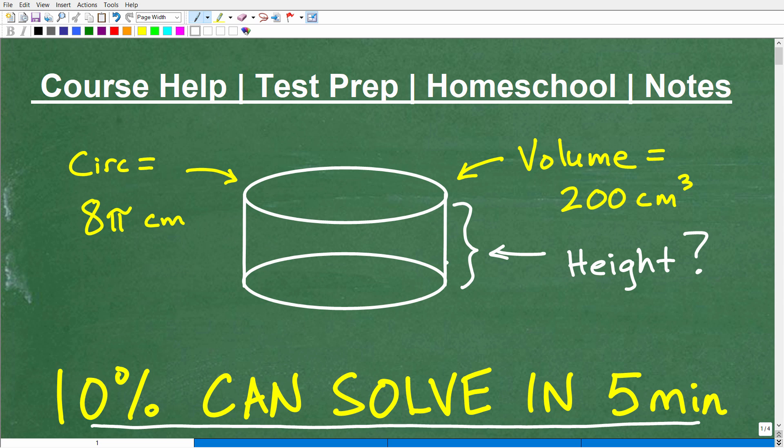We have some sort of figure here. It kind of looks like a can, like a soup can. That's a good hint. The volume of this particular figure is 200 centimeters cubed. And right over here on top, we've got some sort of circle with a circumference of 8π centimeters. So we have two pieces of information: the circumference is 8π centimeters and the volume is 200 centimeters cubed.